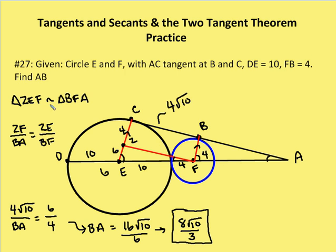I can establish the relationship: triangle ZEF is similar to triangle BFA. ZF is to BA as ZE is to BF. I know that ZF is 4 root 10, I don't know what BA is, ZE is 6 units, and BF is 4 units. So if you cross multiply, we end up with BA equaling 16 root 10 over 6, which is 8 root 10 over 3. That's how we figure out the length of AB: 8 root 10 over 3.